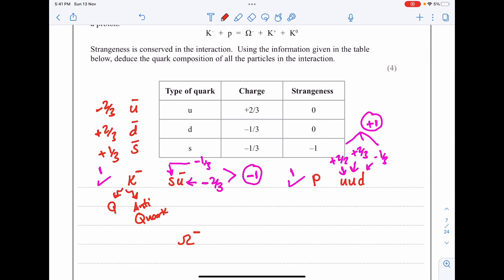The composition is s s s, three strange quarks. To apply the conservation law, the omega negative strange is -1/3 times three, which should give us -1. Then I get one mark.